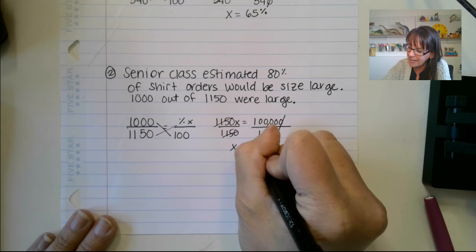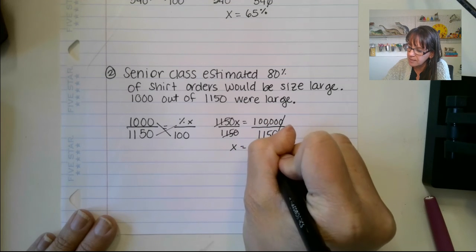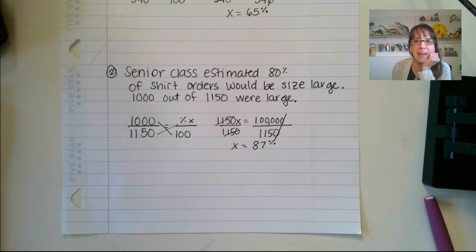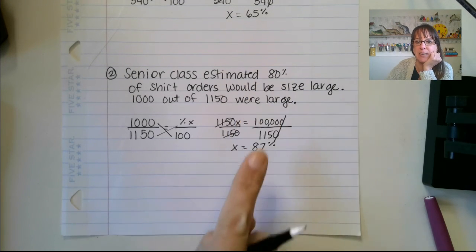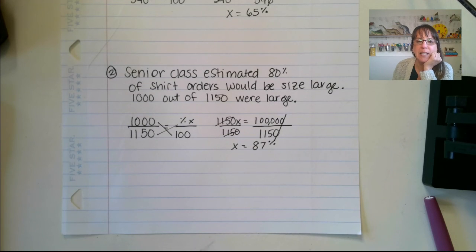So we end up with about 87%, roughly 87%. And so if you take a look at that, that makes sense because they said about 80%. So that's a little high, but that's okay. But it is a little bit closer to that.